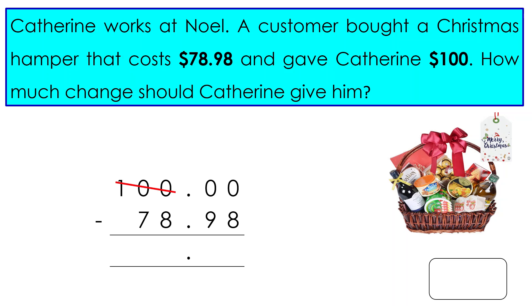Now, we write 99 as the remaining dollar value and $1 is carried forward to the $10 position. Next, we need to borrow from the $10 position by putting a slash.